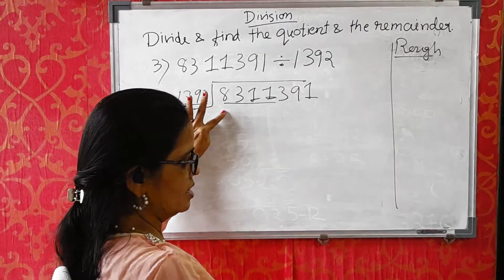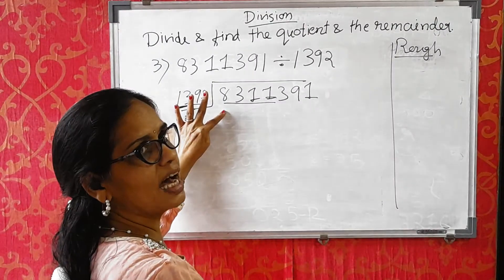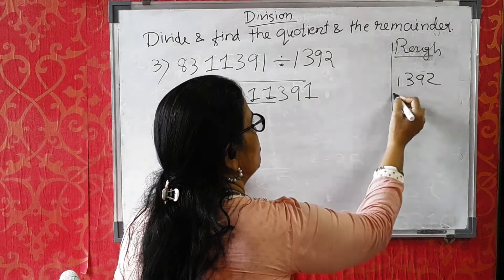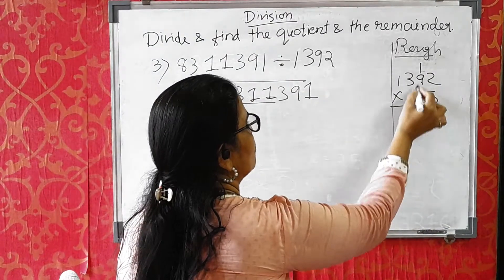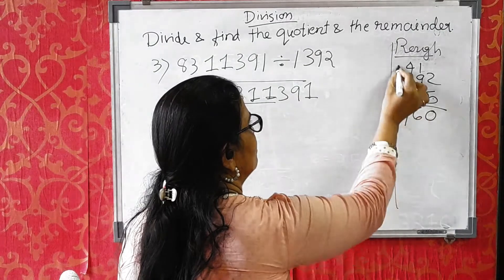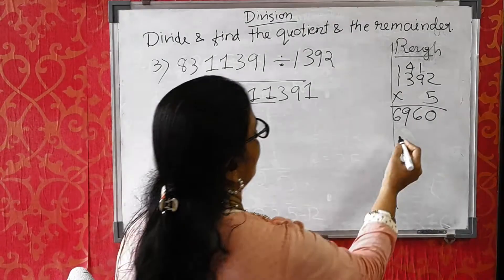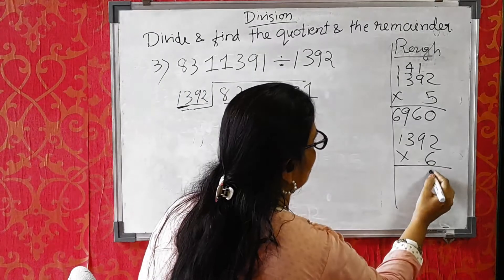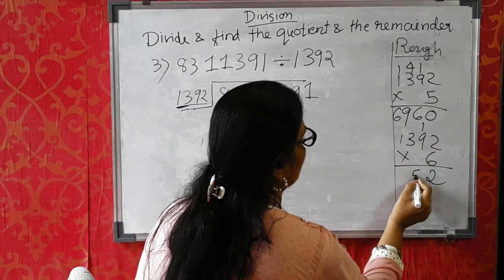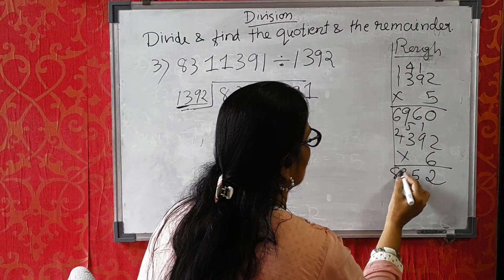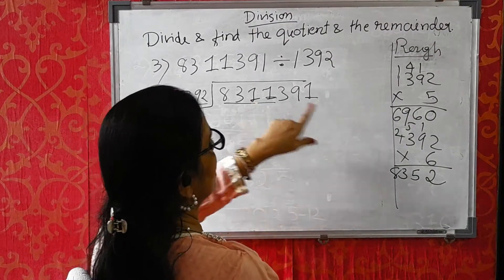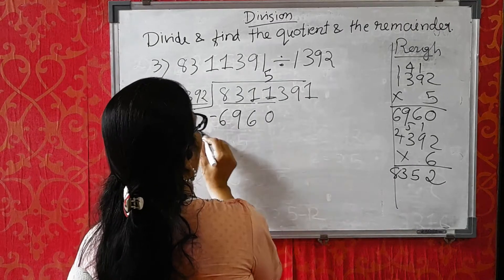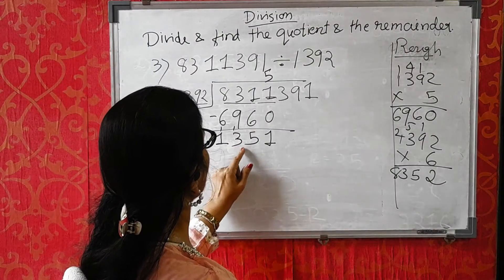In the 13 table: 13×5=65, 13×6=78. So I check 1392×5: 5×2=10, 9×5=45+1=46, 3×5=15+4=19 wait — working it out: 1392×5=6960. And 1392×6 would give a bigger number, 8352, which is bigger than 8311. So it goes by 5 and 1392×5=6960. Subtraction gives 1351. Take the new digit down.